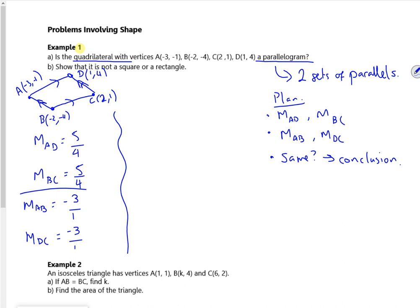So look, we've got them showing as the same. So let's have a little conclusion. So as M from A to D equals M from B to C, and M from A to B is equal to M from D to C, therefore A, B, C and D are a parallelogram.